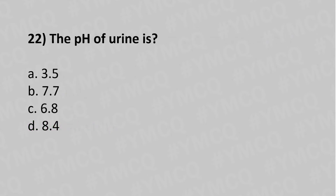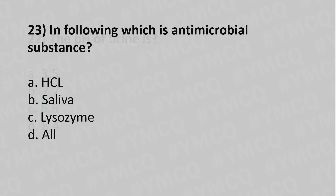Now let's move to question number twenty-two: The pH of urine is which of the following? Option A: 3.5. Option B: 7.7. Option C: 6.8. Option D: 8.4. The answer is Option C: 6.8.